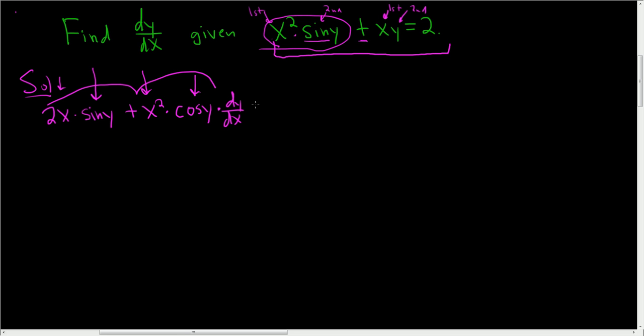Over here, we still have this plus sign, so plus. Again, the product rule. The derivative of x is 1 times the second, plus the first, times the derivative of the second, which is dy/dx. And on the right-hand side, the derivative of 2 is just 0.